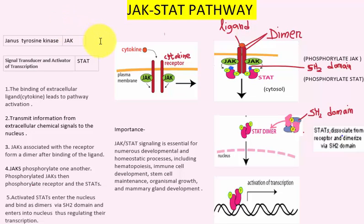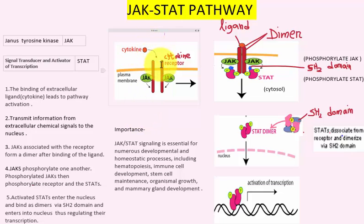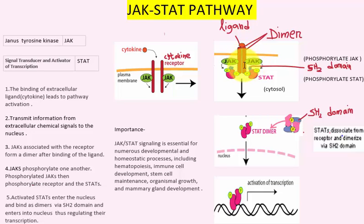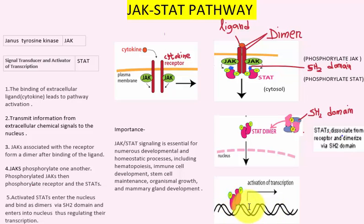Let's summarize. JAK is Janus tyrosine kinase and it transduces cytokine-mediated signals via the JAK-STAT pathway. The STAT protein helps to transduce and activate transcription. In the mechanism: first the cytokine (ligand) binds to the receptor; JAK is attached to the receptor in monomeric form. Upon cytokine binding, JAK and receptor form a dimer, leading to pathway activation. JAK then phosphorylates the STAT protein. STAT forms a dimer via the SH2 domain, enters the nucleus, binds to DNA, and regulates transcription.